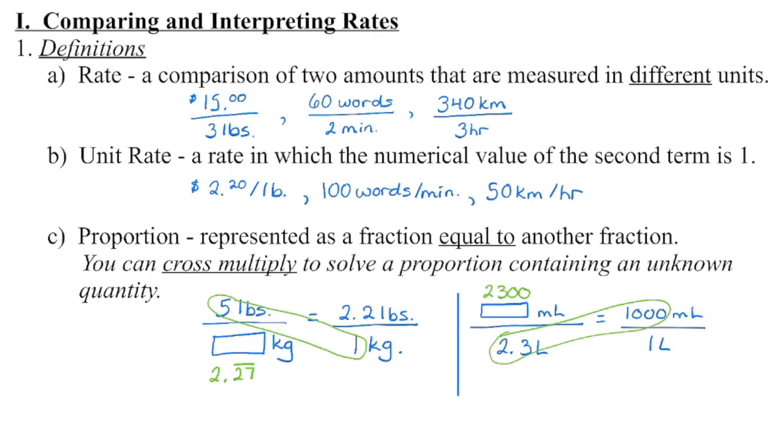Likewise, over here, we're going to go 5 times 1 divided by 2.2, and that's going to give us the number of kilograms. So if you know the conversion rate and aren't sure, do we multiply or do we divide, set up your proportion, cross-multiply, and you'll get the answer every time.